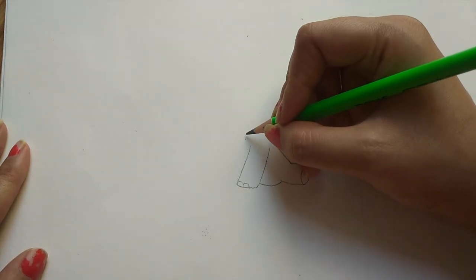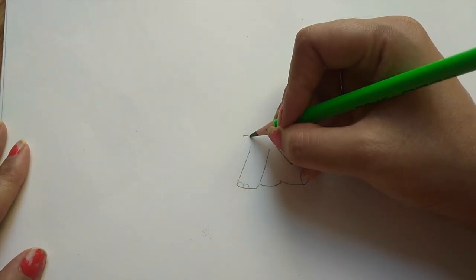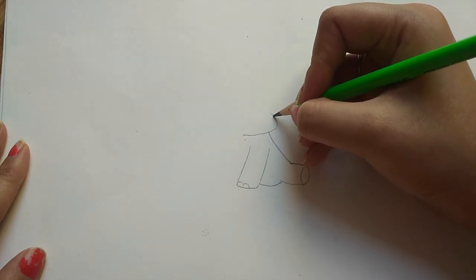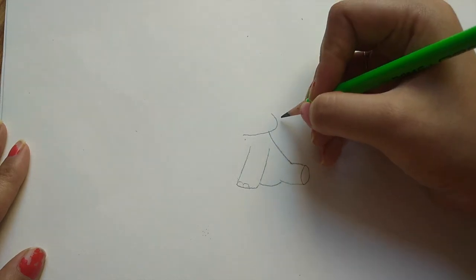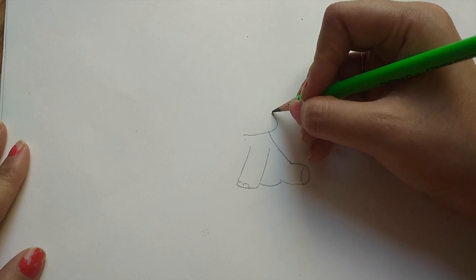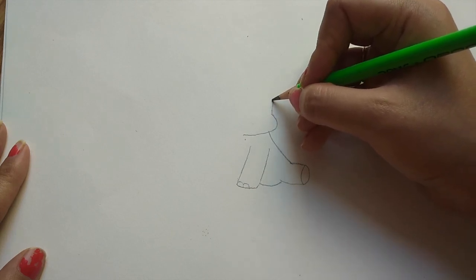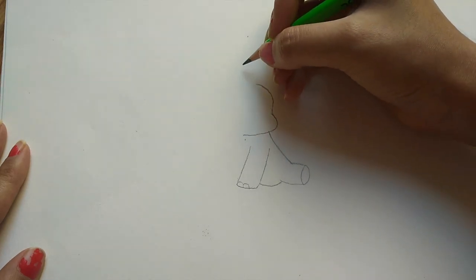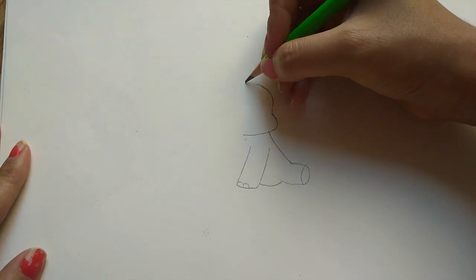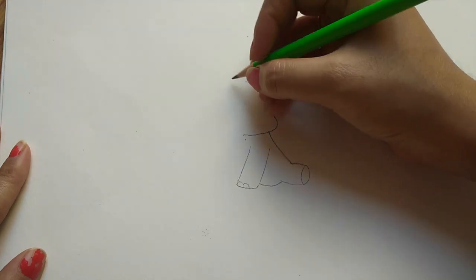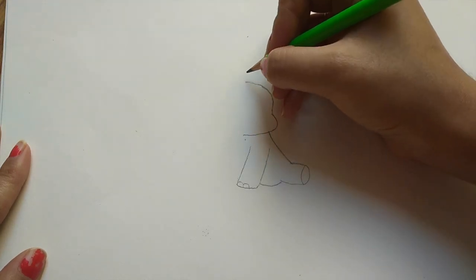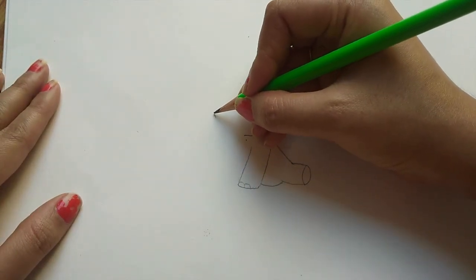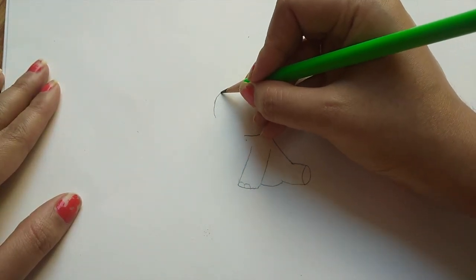Now from here we will start the face of our baby elephant, just like Mickey Mouse face. Now draw the head of the elephant. Draw exactly like I'm doing. Leave a little space here for the hairs, and then from here try to join those parts.